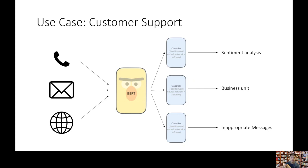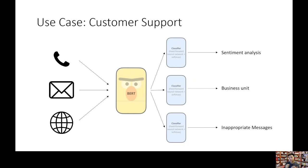We can also give the output of BERT to a classifier that tells us what business unit customer support messages are for — for example, the billing department or network support, or different products. And another example: we might want to avoid giving customer service reps inappropriate messages, so BERT featurizes the incoming words and classifies them as inappropriate or appropriate, flagging inappropriate messages and keeping them from manual review. These are some ways you can use BERT — by changing the input and output, or using BERT to turn words into context-aware numerical representations.